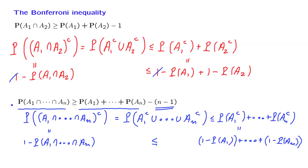So these Bonferroni inequalities are a nice illustration of how one can combine De Morgan's laws, set-theoretic operations, and the union bound in order to obtain some interesting relations between probabilities.